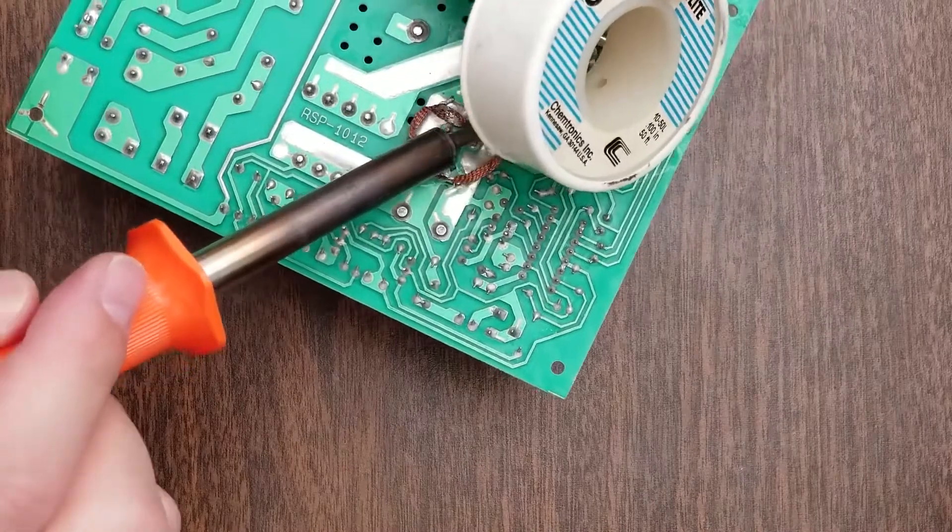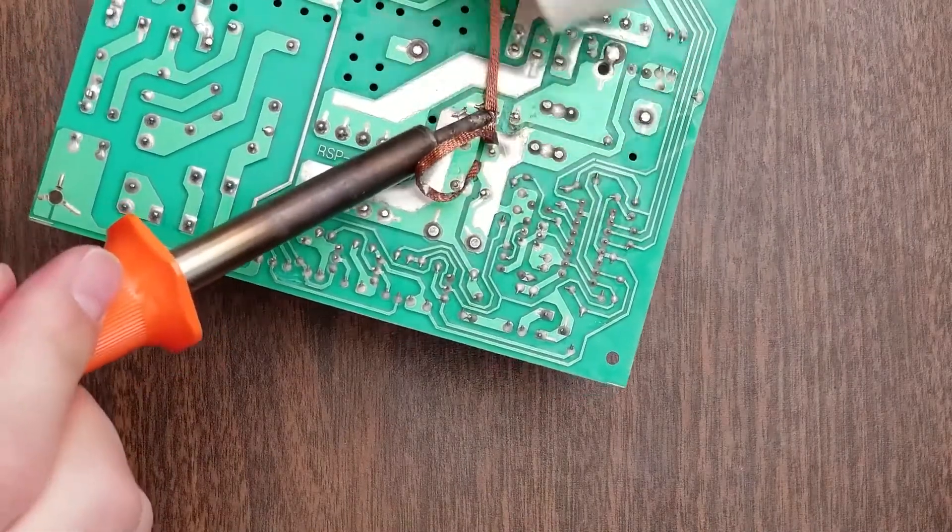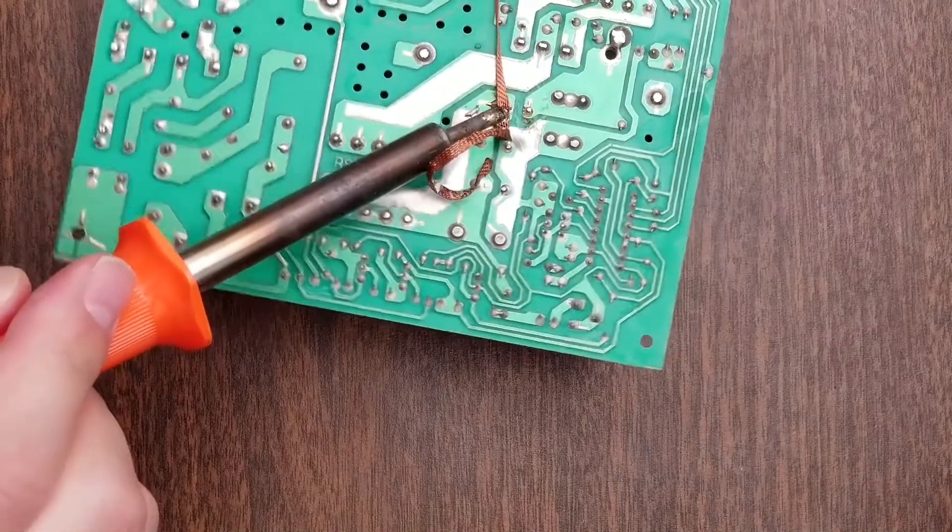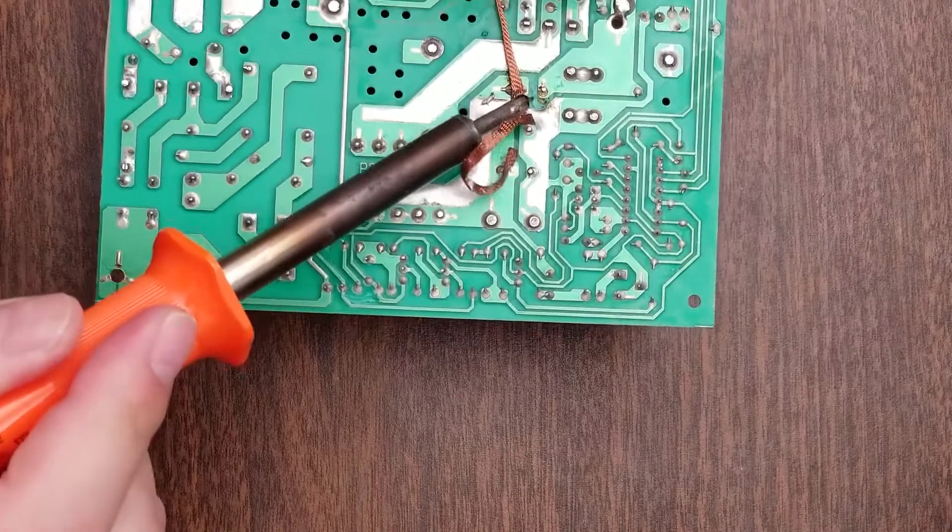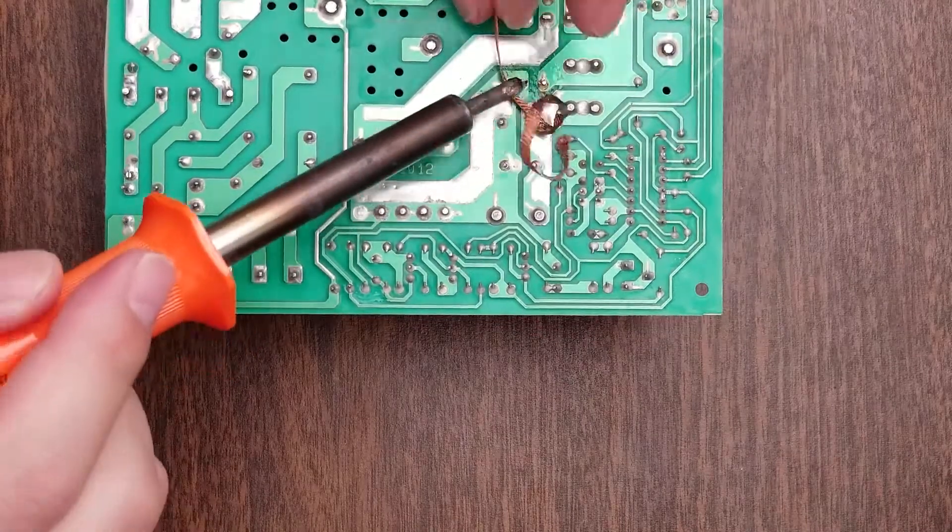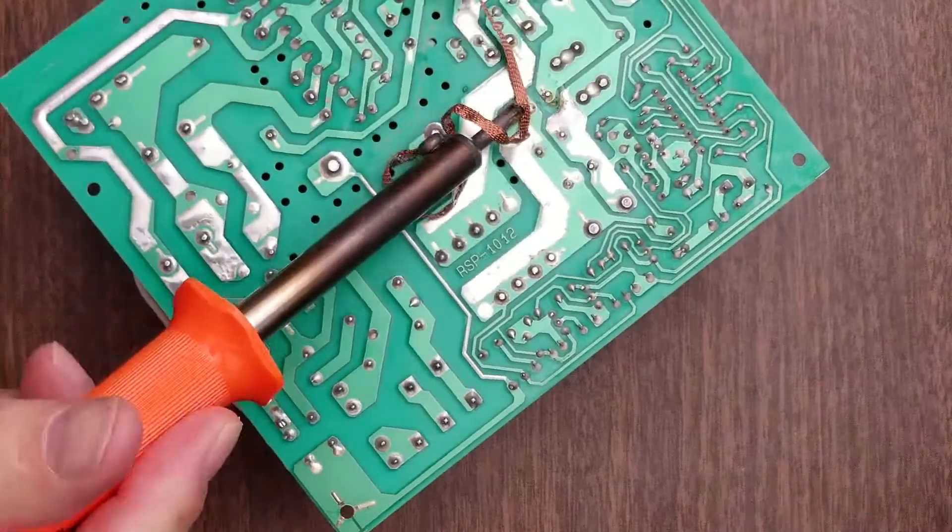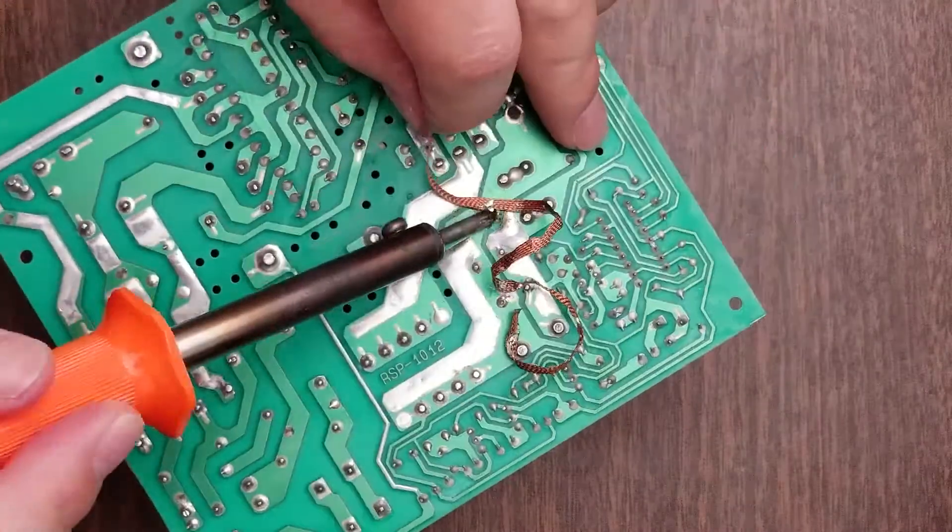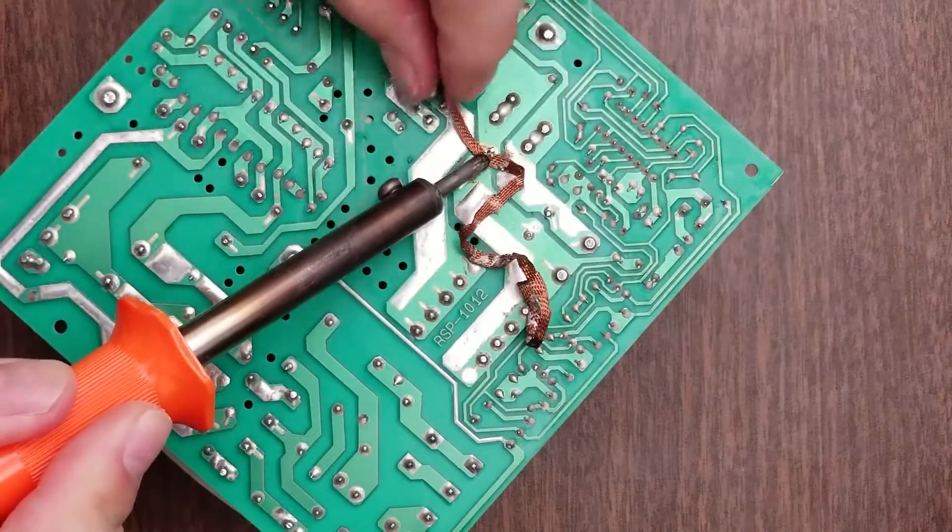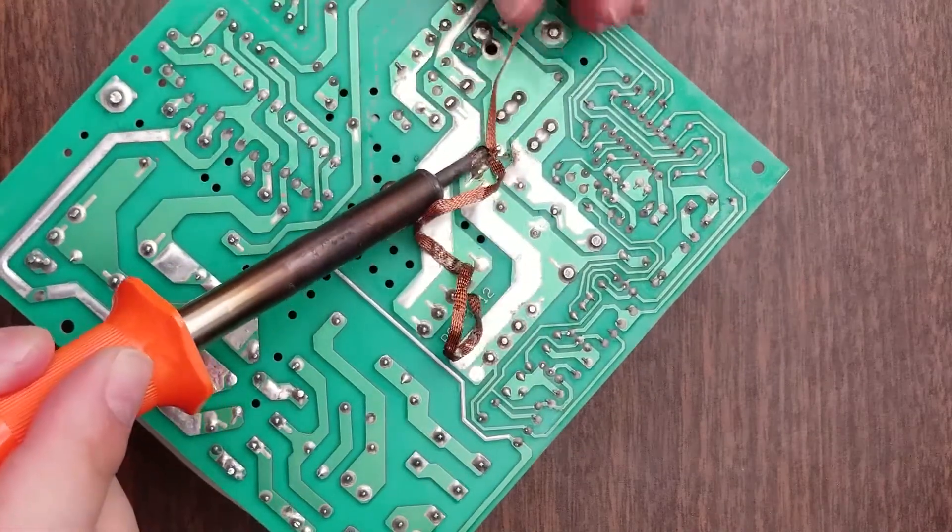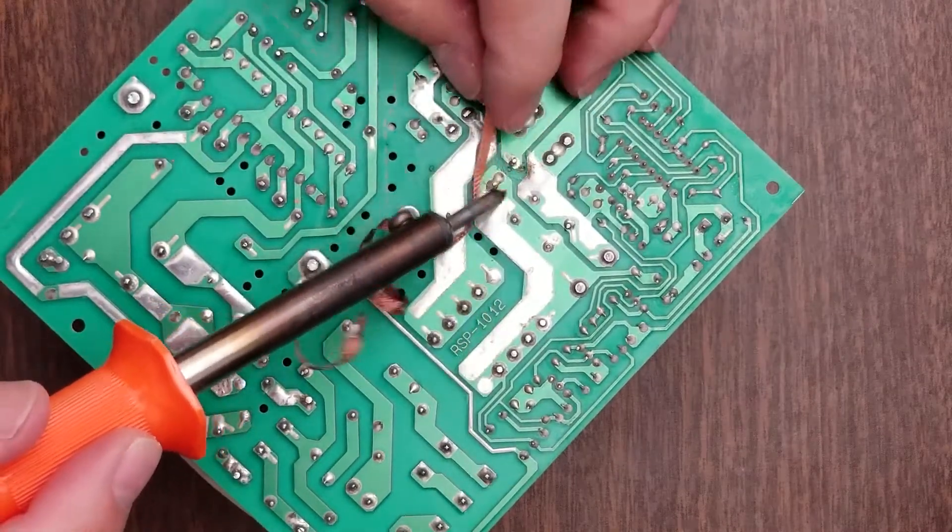So just little by little I'm working away, switching back and forth between pads to keep from overheating them. The flux in my solder wick might be a bit on the old side. That's why I pre-fluxed them, but I think I may need to flux it again.